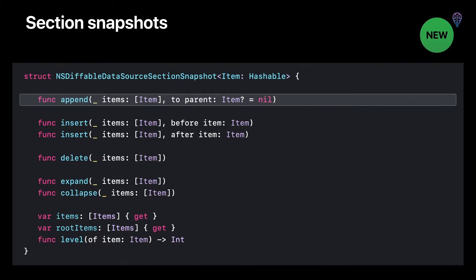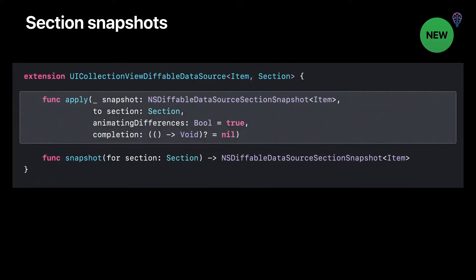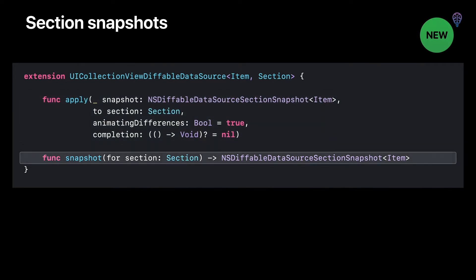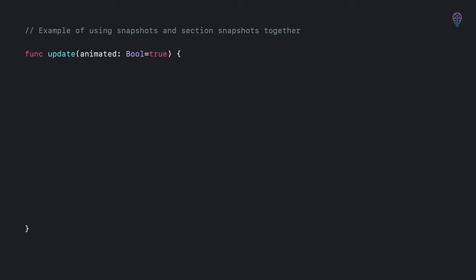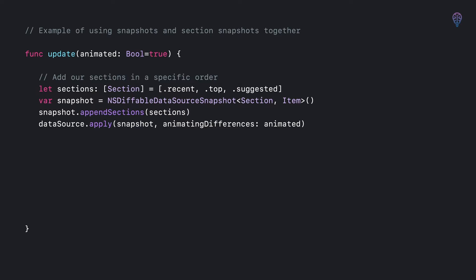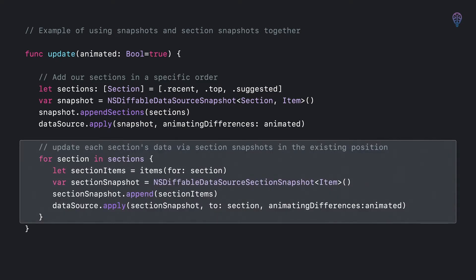We've added two new APIs to UICollectionViewDiffableDataSource to accommodate section snapshots. First, a new apply method that takes a section snapshot and a section identifier. Second, an API to retrieve a section snapshot representing a particular section's contents. In a code snippet showing how to use snapshots and section snapshots together: we first apply a snapshot to add sections in the desired order — recent, top, and suggested — then populate items for each section by applying section snapshots directly to each section.